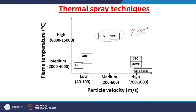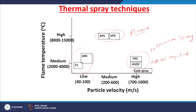Plasma techniques have high flame temperatures up to 15,000°C, with medium particle velocity of around 200 to 600 meters per second. Detonation spray coating and high velocity oxy-fuel techniques have temperatures of around 2000 to 4000°C, but a very high particle velocity of 700 to 1000 meters per second.